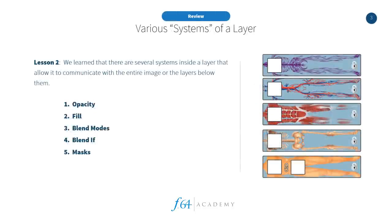The second thing we talked about were the various systems of a layer — the systematic functions that keep a layer working within all the other layers inside the layer palette. Those are opacity, fill, blend modes, blend if, and masks. Keep these things in mind. When we go in and actually start looking at the workflow, you're gonna see where opacity, fill, blend modes, blend if, masks, and layer types are all coming in. I'll point them out, but it would be a good idea to try and find them yourself.